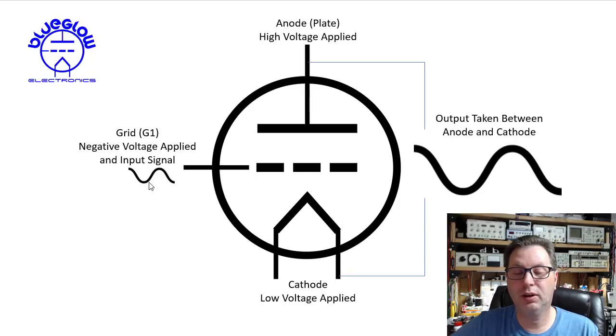And so if your signal here is small, controlling how much you turn on or off the tube, but your plate voltage is very high here, what you start to see if you measure between the plate and the cathode or the anode and cathode is you start to see a very large signal that resembles the input signal, and that would be your output signal. Thus that is called amplification.